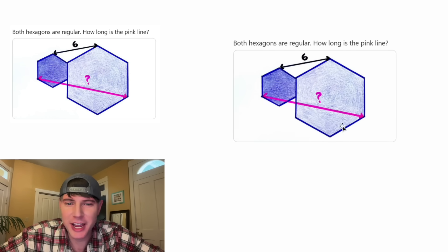For the month of December, we're gonna solve 31 Katrina Ag puzzles. We're given two regular hexagons. This has a length of six, and it wants us to find this length.